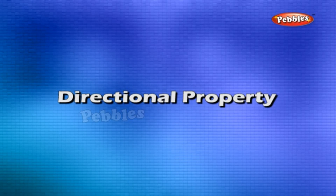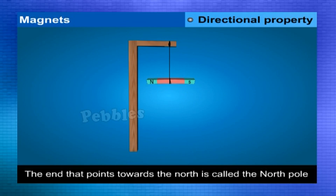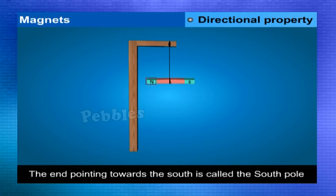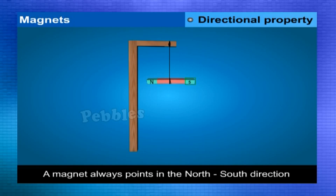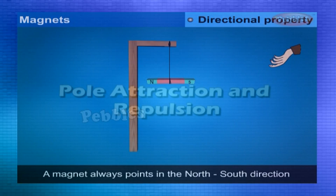The end of the magnet that points towards the North is called the North Pole (N Pole), and the other end pointing towards the South is called the South Pole (S Pole). A magnet always points in the north-south direction when suspended freely.